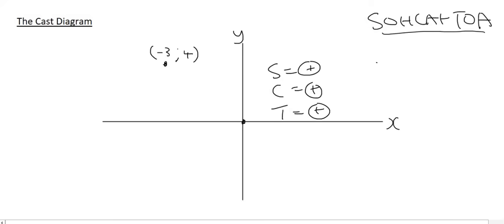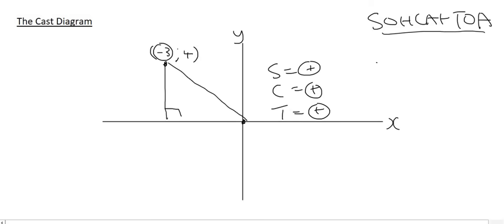Moving to the next quadrant, the point is at (-3, 4) — it's 3 units to the left and 4 units up. We can construct a triangle there. The way the coordinate system was invented, you always begin the angle starting on the positive x-axis and rotate around until you hit that line, and that whole angle we call theta. But don't worry about that — just pretend the angle you're using is the small inside corner angle.